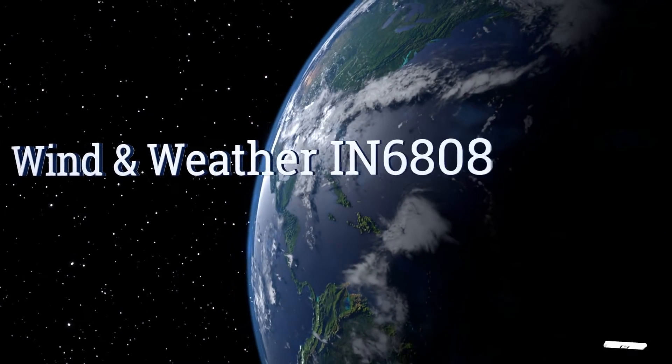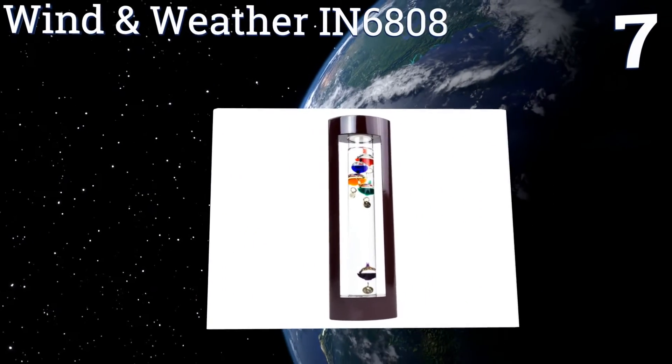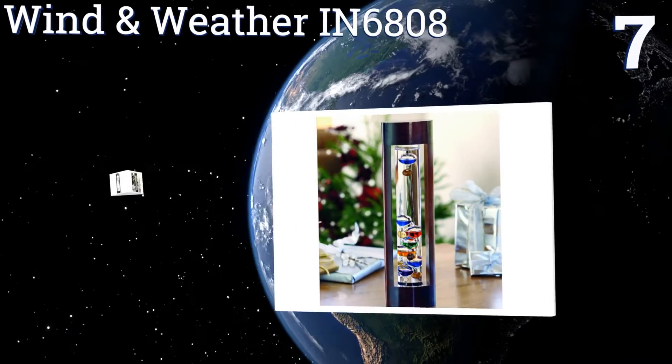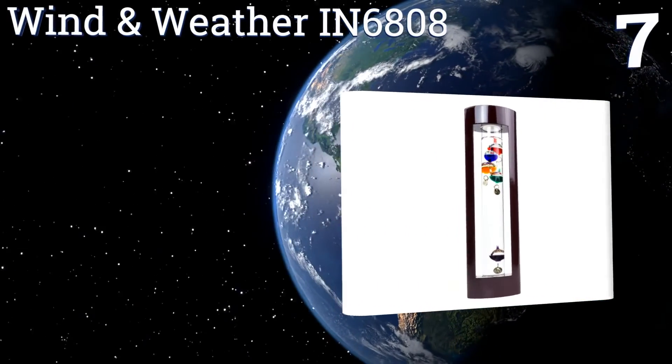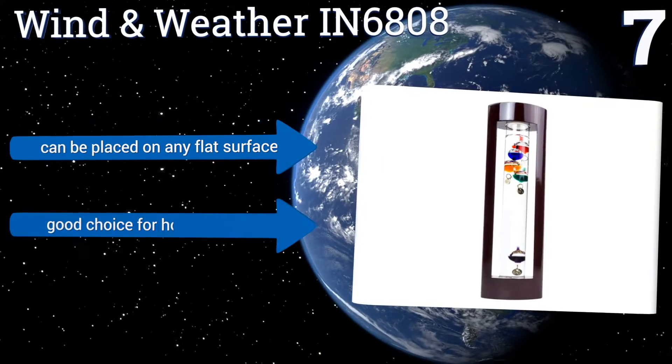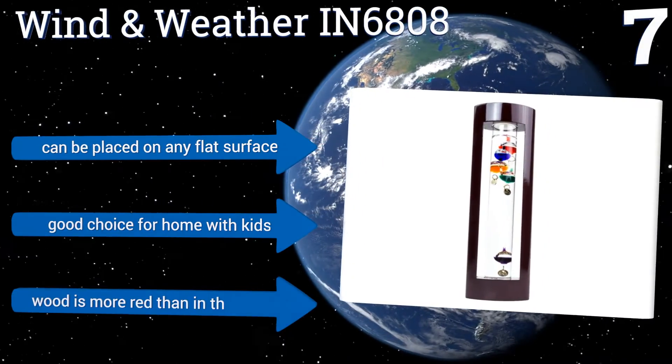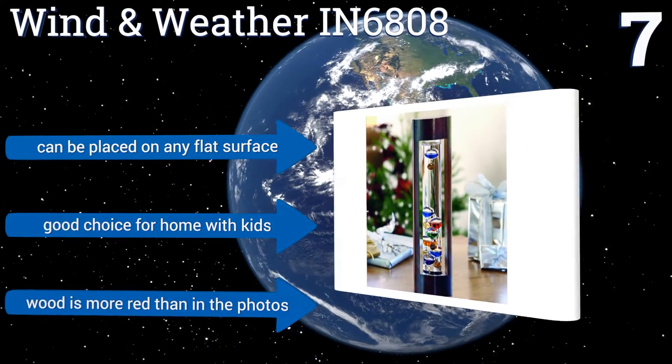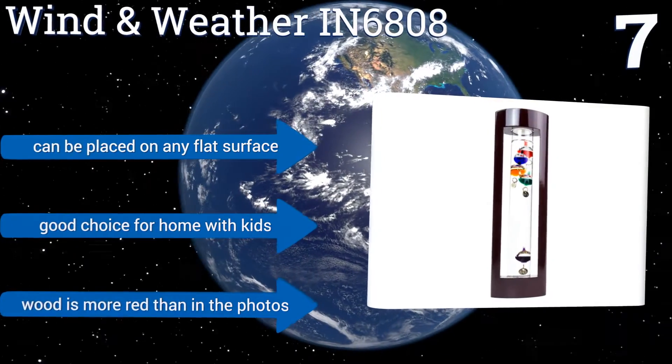At number 7, the wooden frame surrounding the Wind & Weather IN6808 serves two purposes. First, it adds an aesthetic aspect to the standard glass tube design, and second, it adds some protection that's conspicuously absent in most versions. It can be placed on any flat surface, and is a good choice for a home with kids. But note that the wood is more red than in the photos.